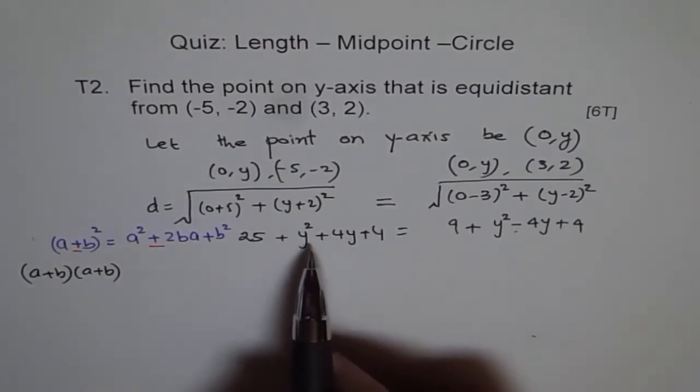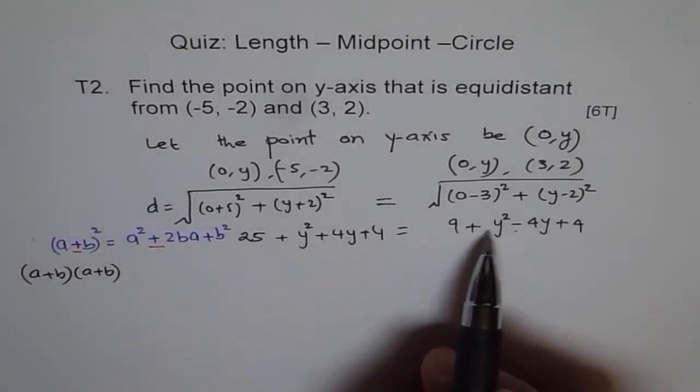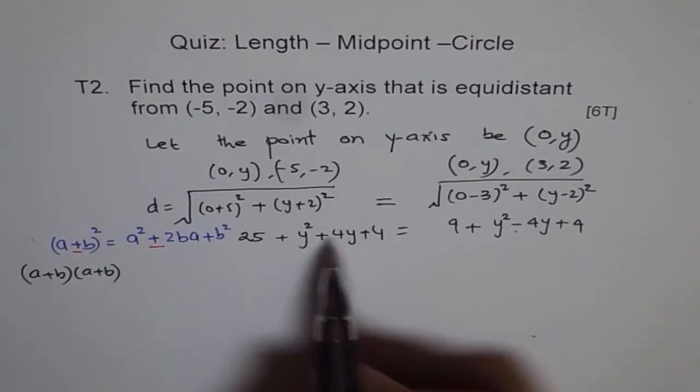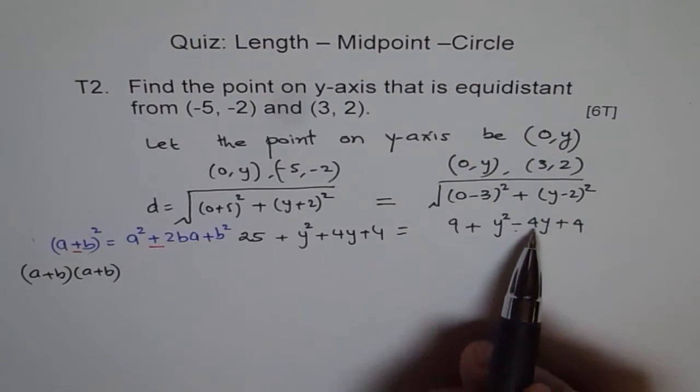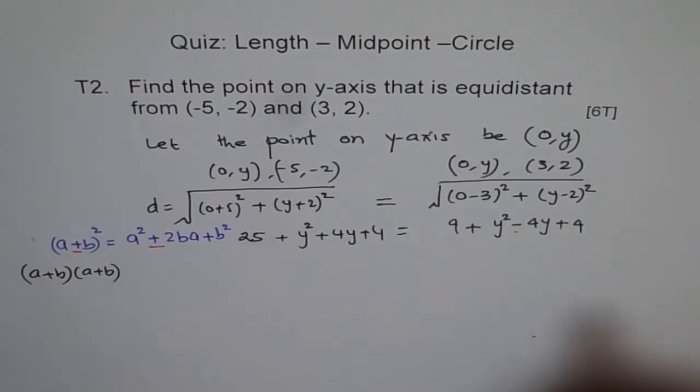Now when we want to solve this, we'll bring y's on one side. y² will cancel out as you can see. 4y is here, minus 4y, we'll bring y's on this side.